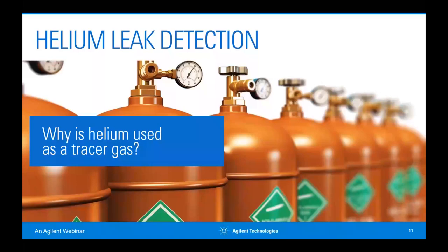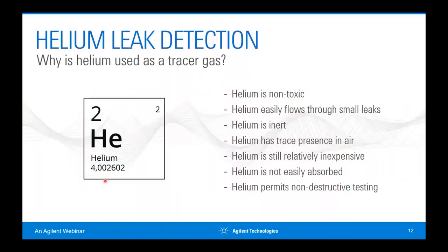So why helium? Helium is a very interesting gas with excellent properties for leak detection. It's totally inert — it won't affect your process or product in any way. It's non-toxic and a very small molecule, so it can easily flow through the types of leaks we're looking for. It's relatively inexpensive and easy to get through industrial gas suppliers. It's at a very low concentration in air — about five parts per million — making it easy to differentiate from background. It allows non-destructive testing.